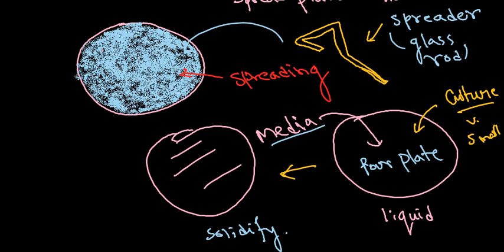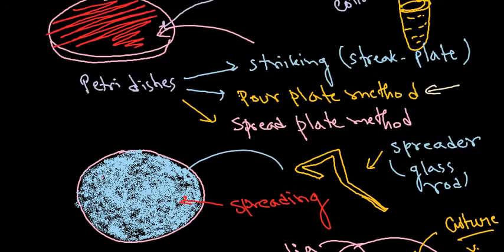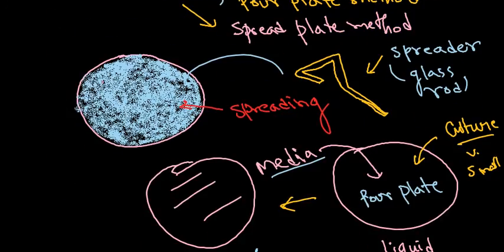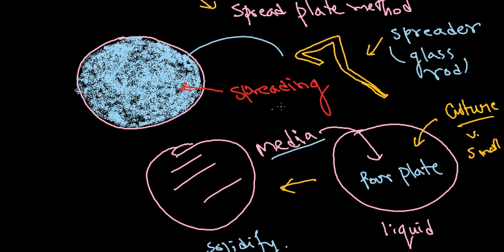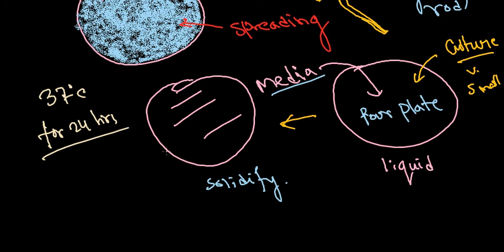Once you've done the streak plate, spread plate, or pour plate — once the process of transferring and culturing is done — the next important stage is incubation. Take all plates or liquid cultures and put them into the incubator. For common bacteria like Bacillus subtilis or Escherichia coli, 37 degrees Celsius for 24 hours generally works. For some pathogenic bacteria, longer incubation of 48 hours up to 5–7 days may be required.